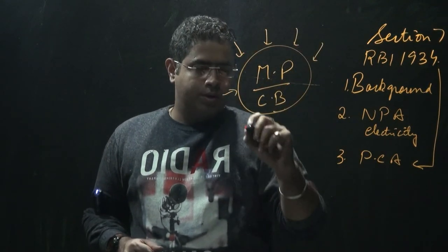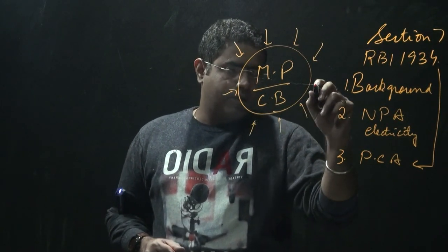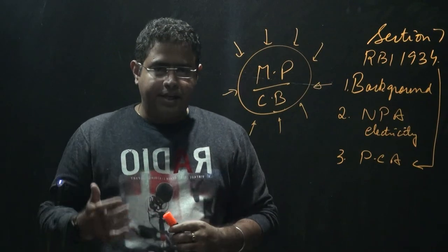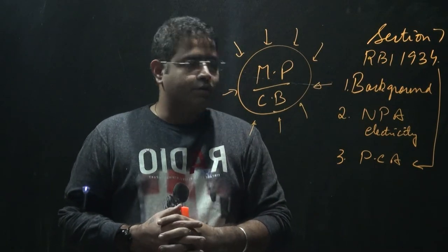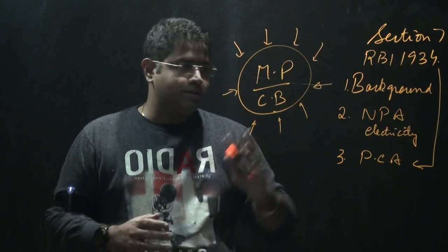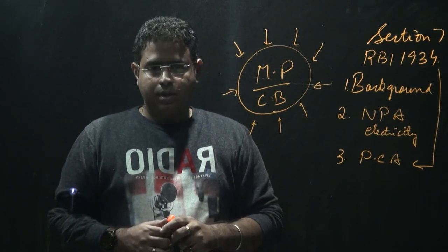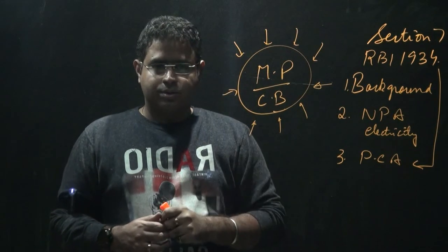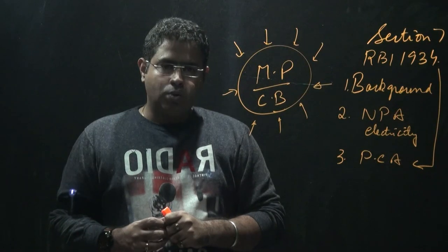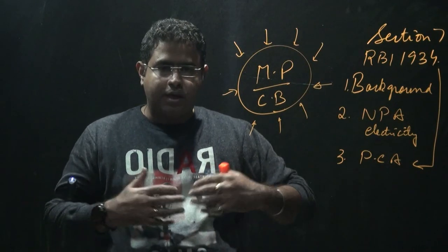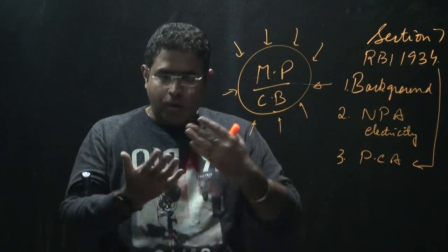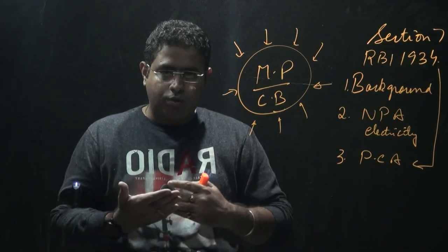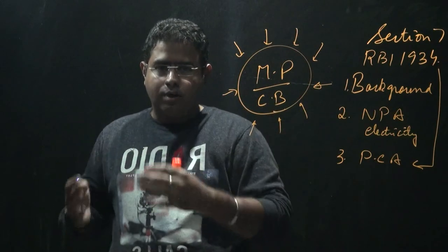But right now, what is happening is that the government in India wants to invoke Section 7 of RBI Act 1934. Now what is this Section 7? Section 7 allows the government to directly pass directions to the central bank on how they should be conducting their affairs. What should their policy be? What should their program be? What should their way of functioning be? This will be decided by the government.